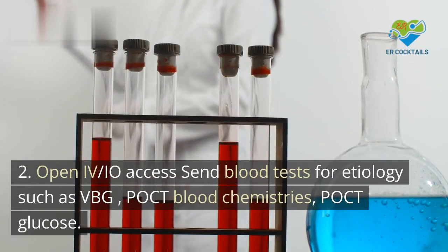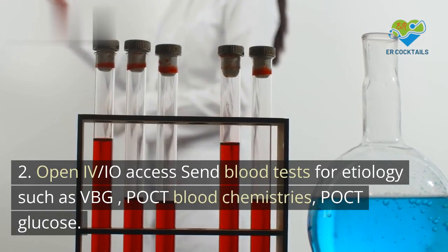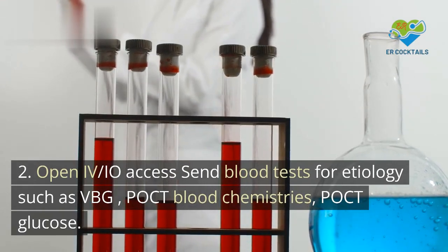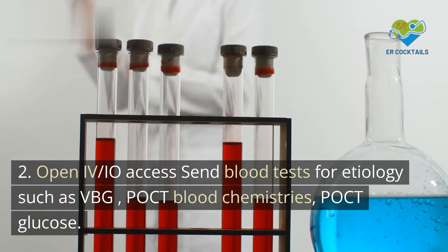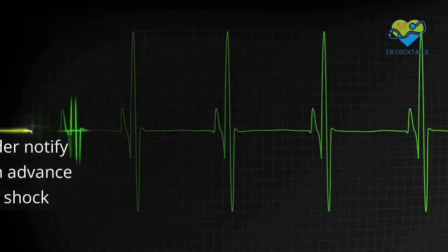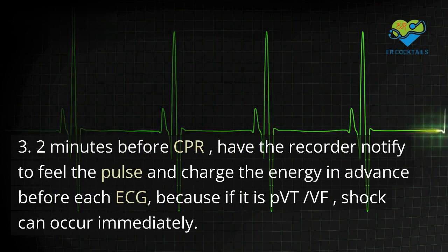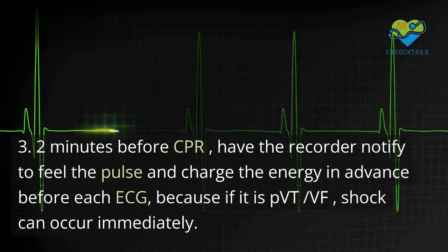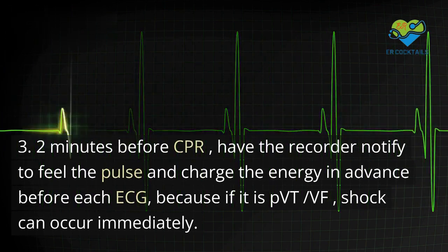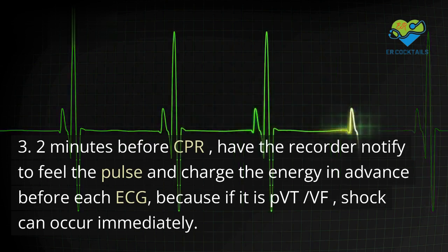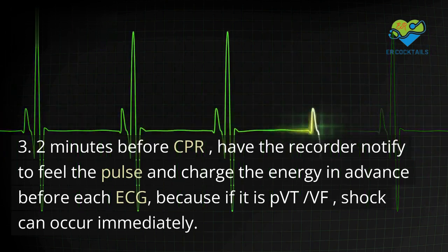Open IV/IO access and send blood tests to determine etiology, such as VBG, POCT blood chemistries, and POCT glucose. Two minutes before the next CPR cycle, have the recorder notify to feel the pulse and charge energy in advance before each ECG check, so that if the rhythm is pVT or VF, shock can occur immediately.